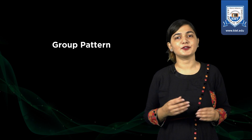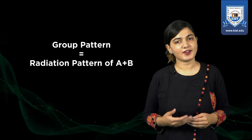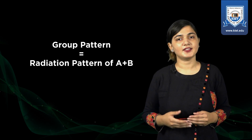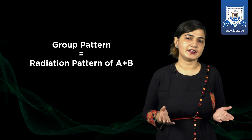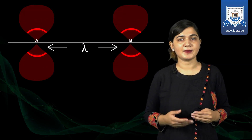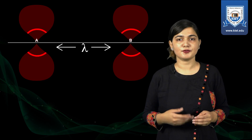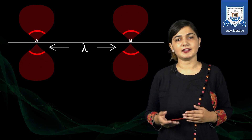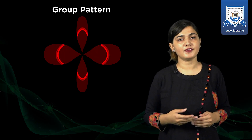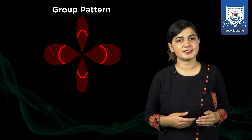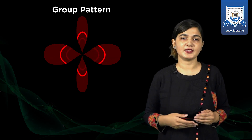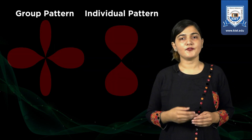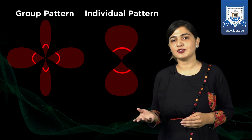So now we consider the group pattern. To find out the group pattern, I look at the radiation pattern of antenna A and antenna B. Antenna A and antenna B are lambda distance apart and there is no phase difference between them. The output radiation pattern of two antennas which are lambda distance apart and having no phase between them is represented like this.